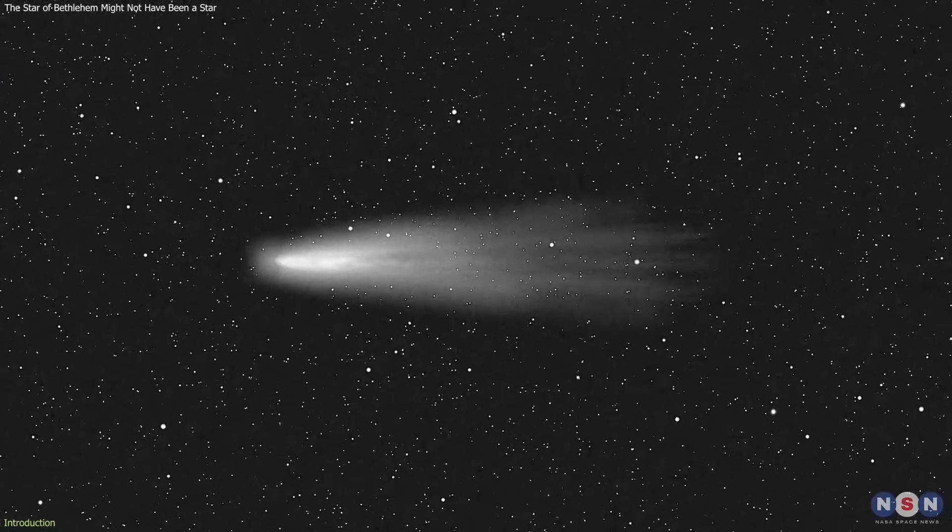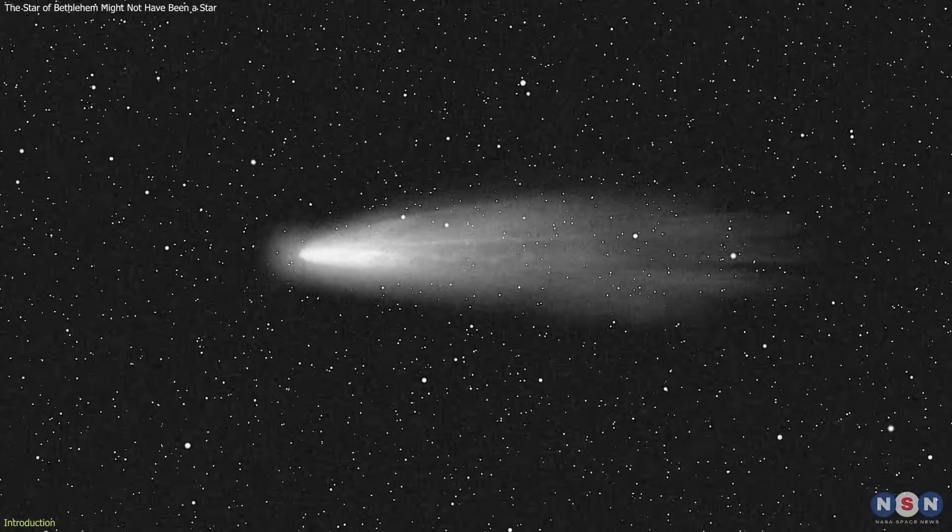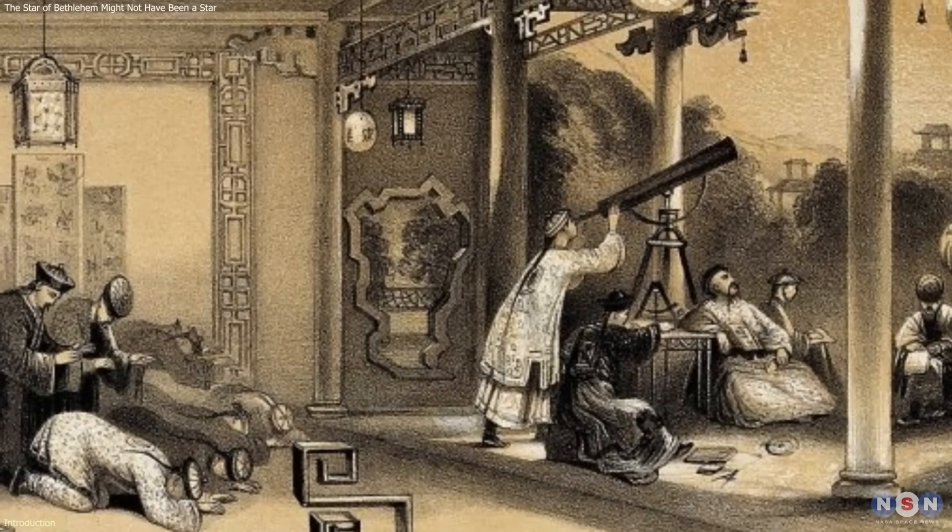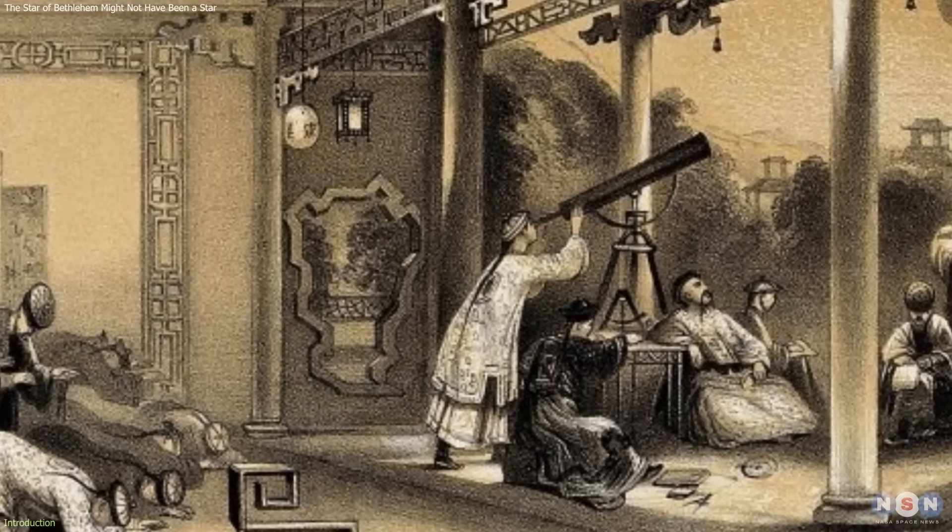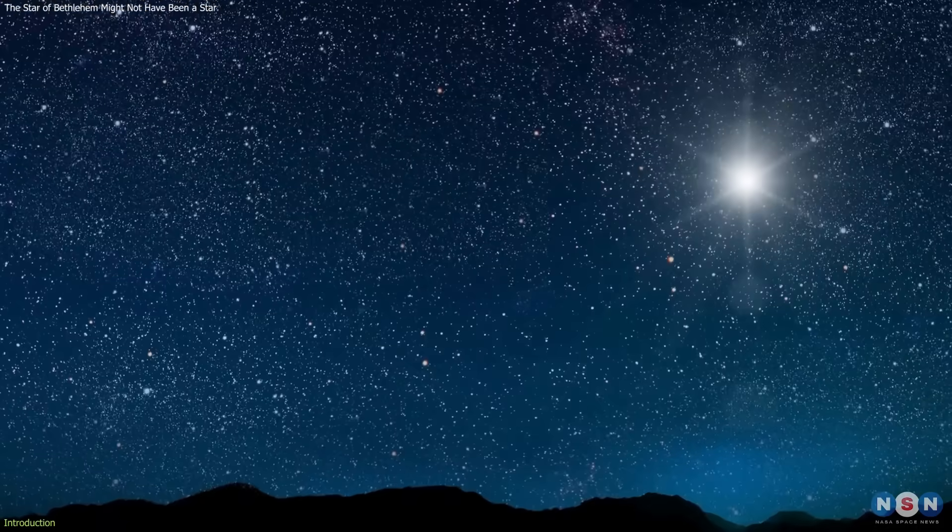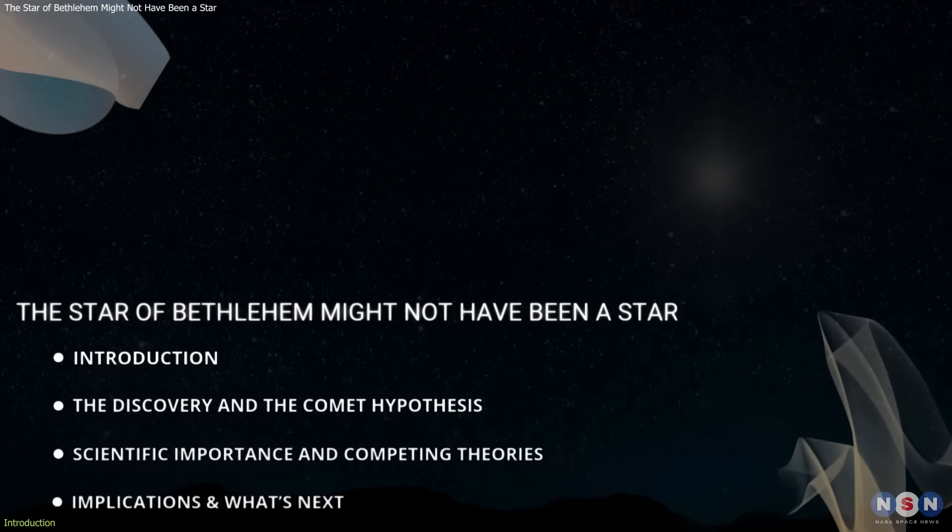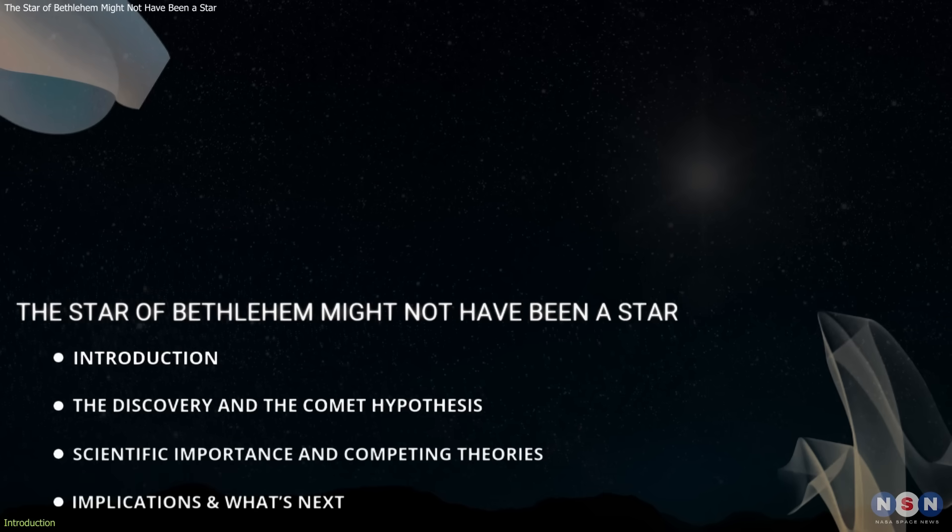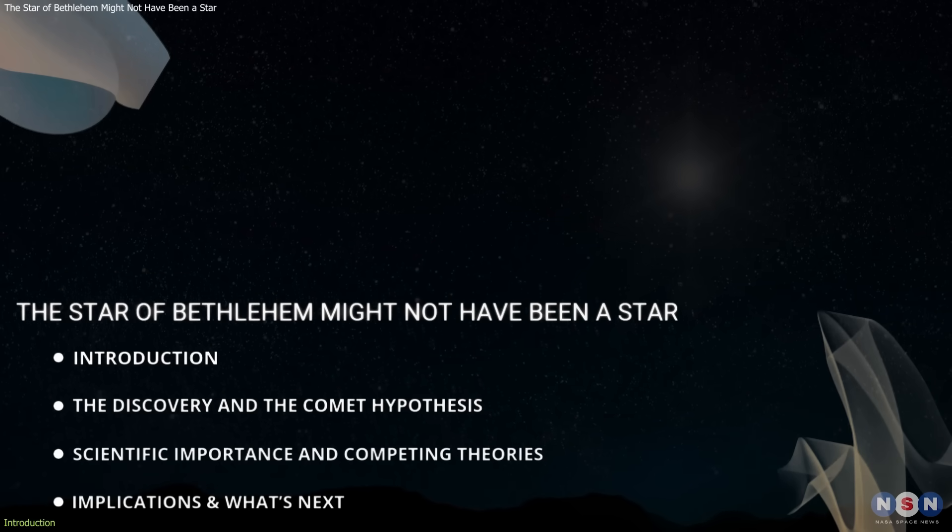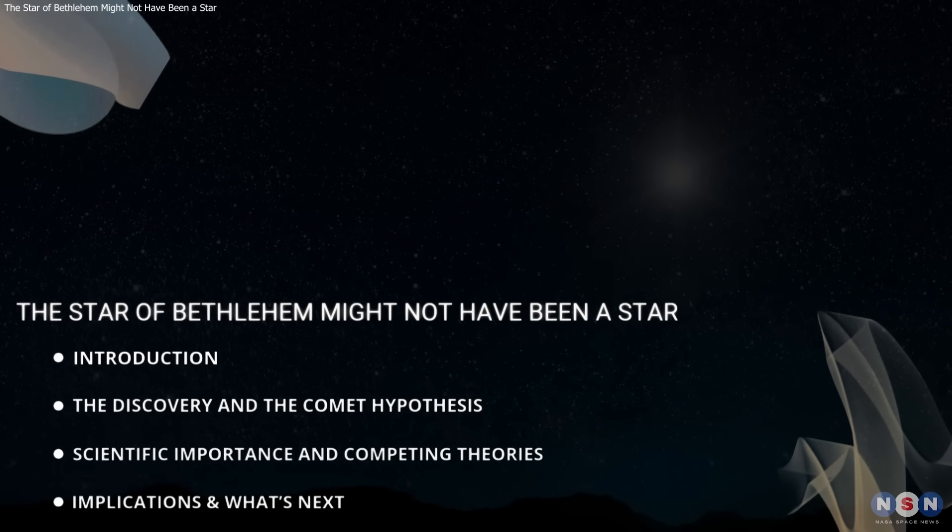a recent scientific study has reopened the discussion from an astronomical perspective. A NASA planetary scientist suggests that an ancient comet recorded by Chinese astronomers around 5 BCE could explain the star's unusual motion and timing. In this video, we will examine the evidence behind this hypothesis, how it was modeled, and what questions still remain. Let's get started.